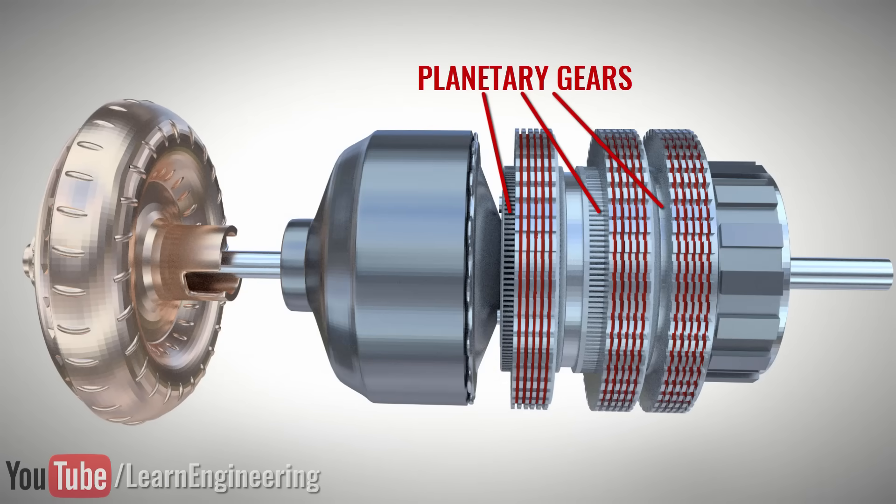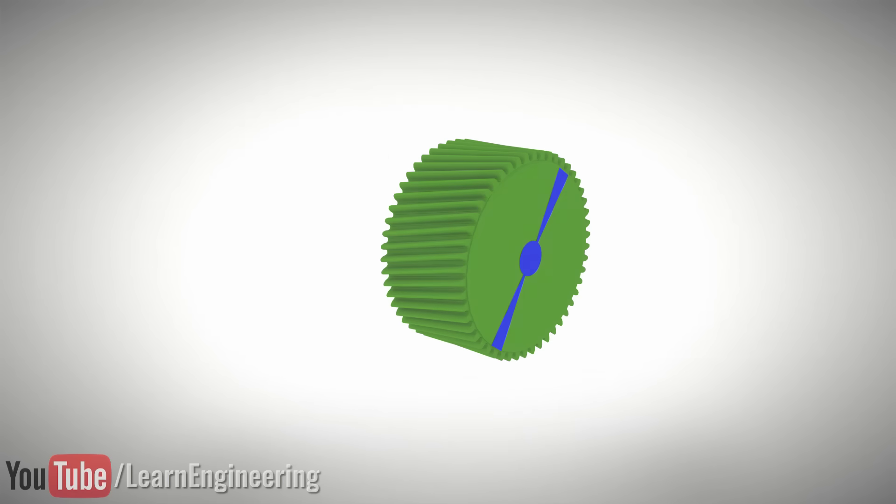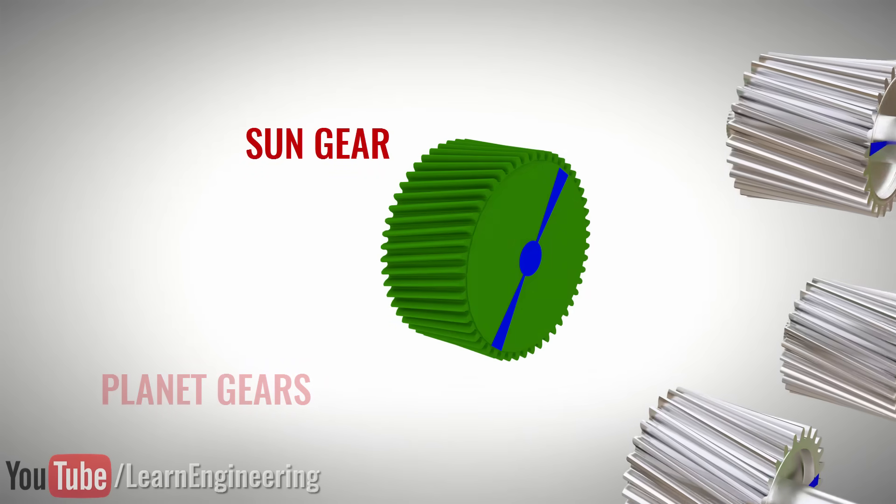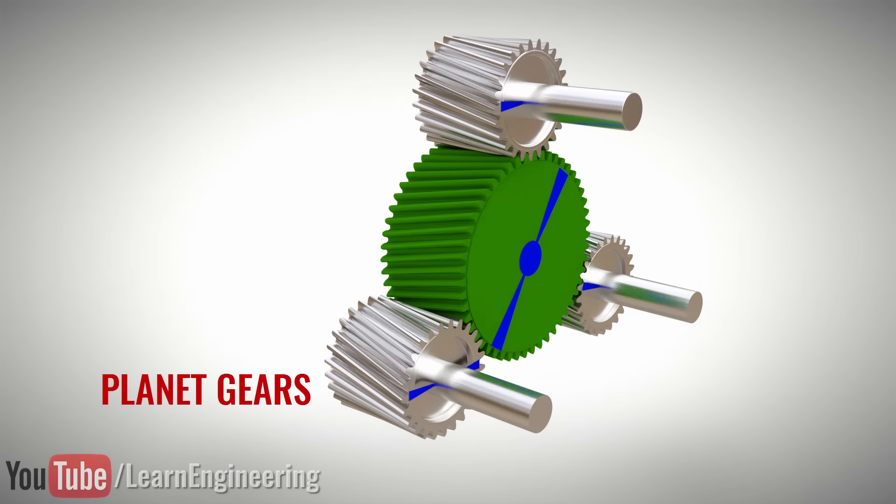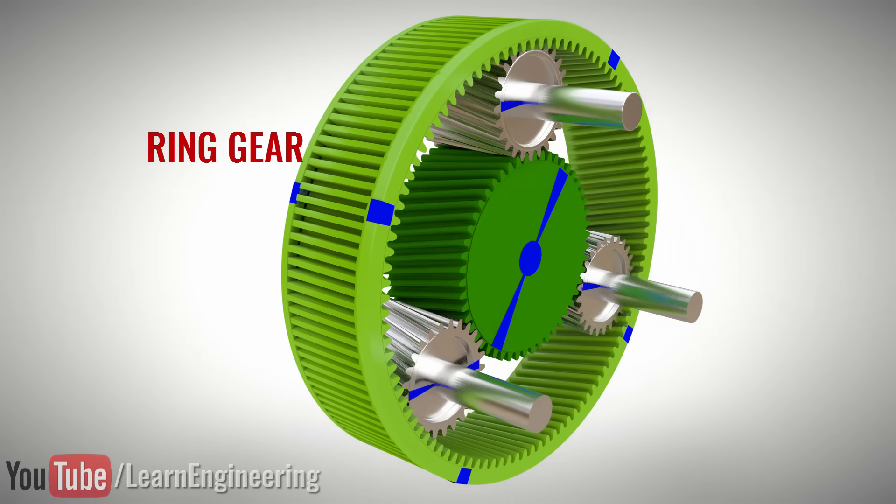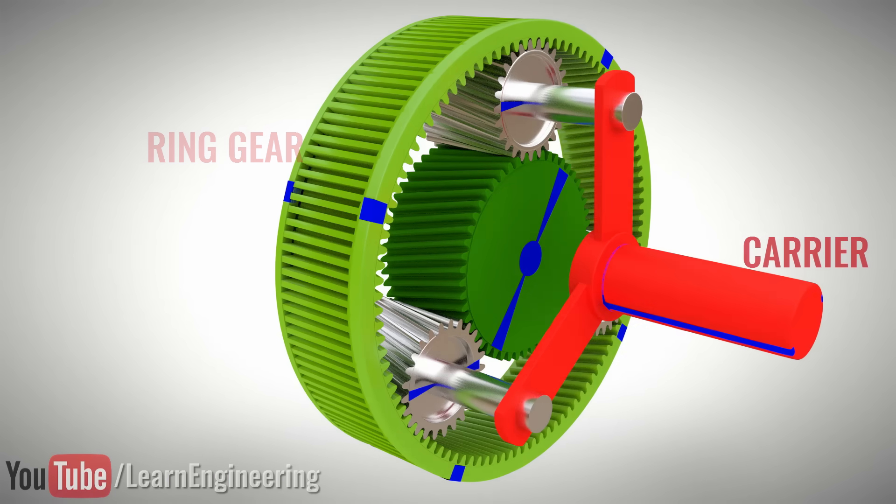A planetary gear set has four main parts: the sun, planet gears, ring gear, and carrier.